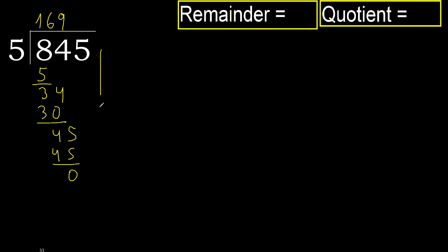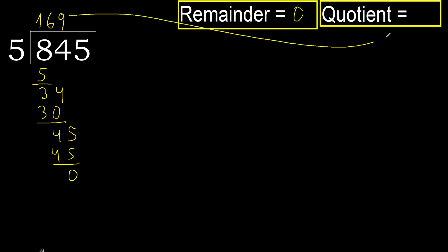Next — there is no number remaining, so we finish. 845 divided by 5 is 169.